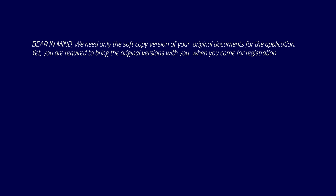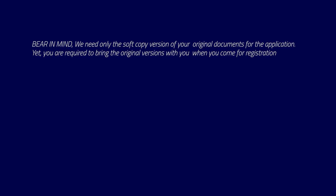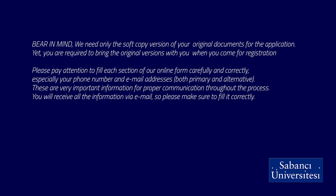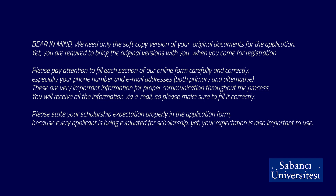Some warnings before we start. First of all, please remember that we only require soft copies of your documents during the application, but eventually when you come for registration, you will need to bring the original versions as well. When filling the online application form, please make sure to fill each section carefully and correctly — this is especially true for your phone number and email address, as these will be the channels through which the university will reach you during the admission process. Finally, please make sure that you state your scholarship expectation properly in the application form. Now let's move on to the online application form itself.